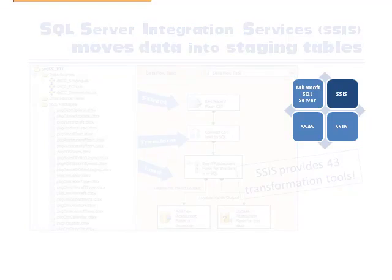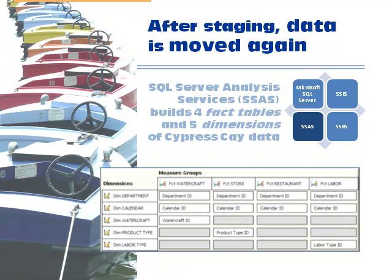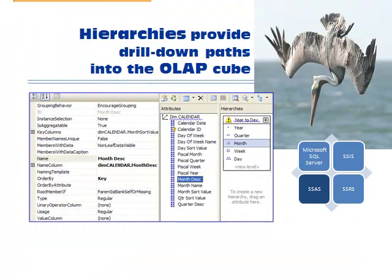From the staging tables, Cypress Quay's four fact tables are moved into a cube that can be sliced and diced by department, calendar dates, watercraft, product type, and labor type. Hierarchies let us drill down the years into quarters, months, weeks, and days.